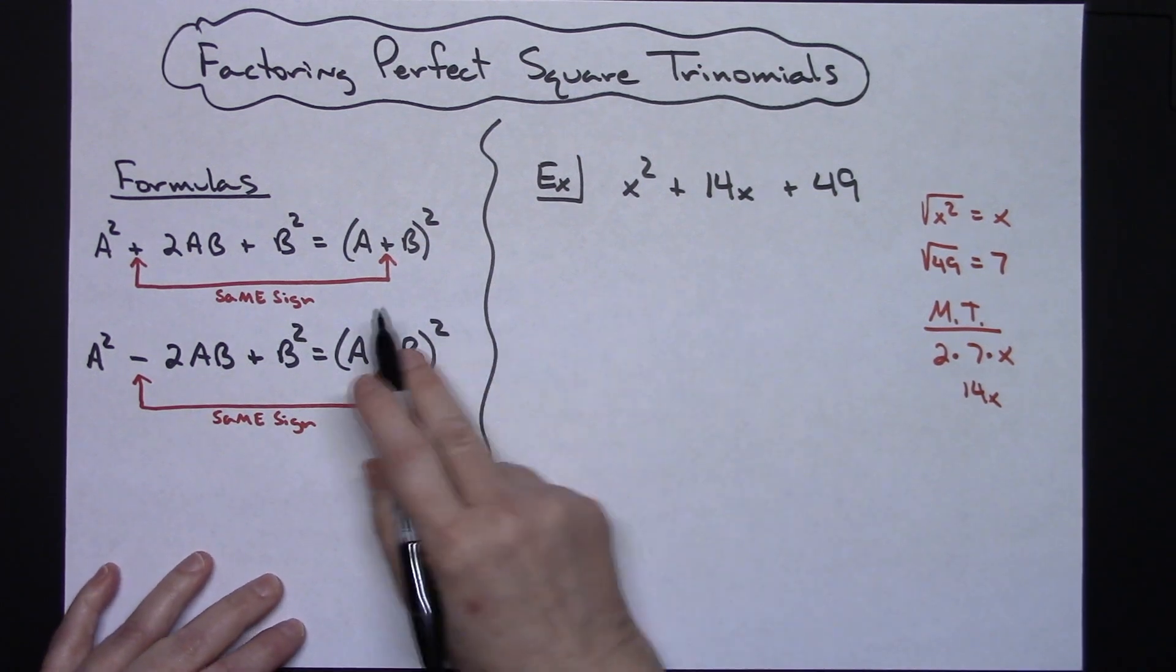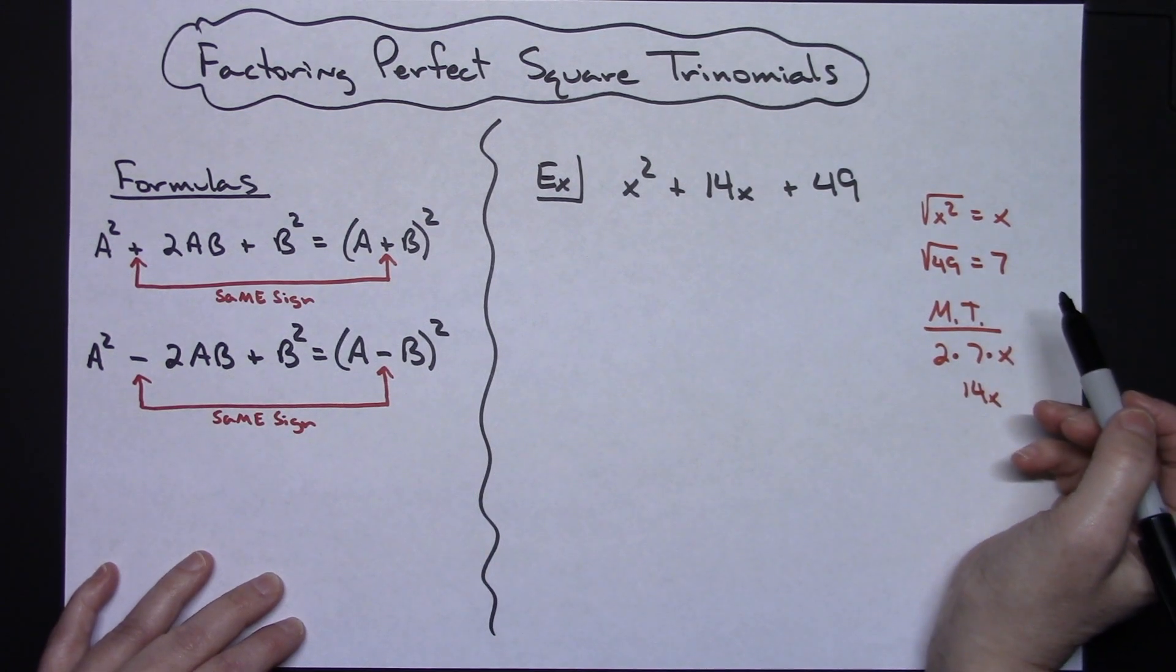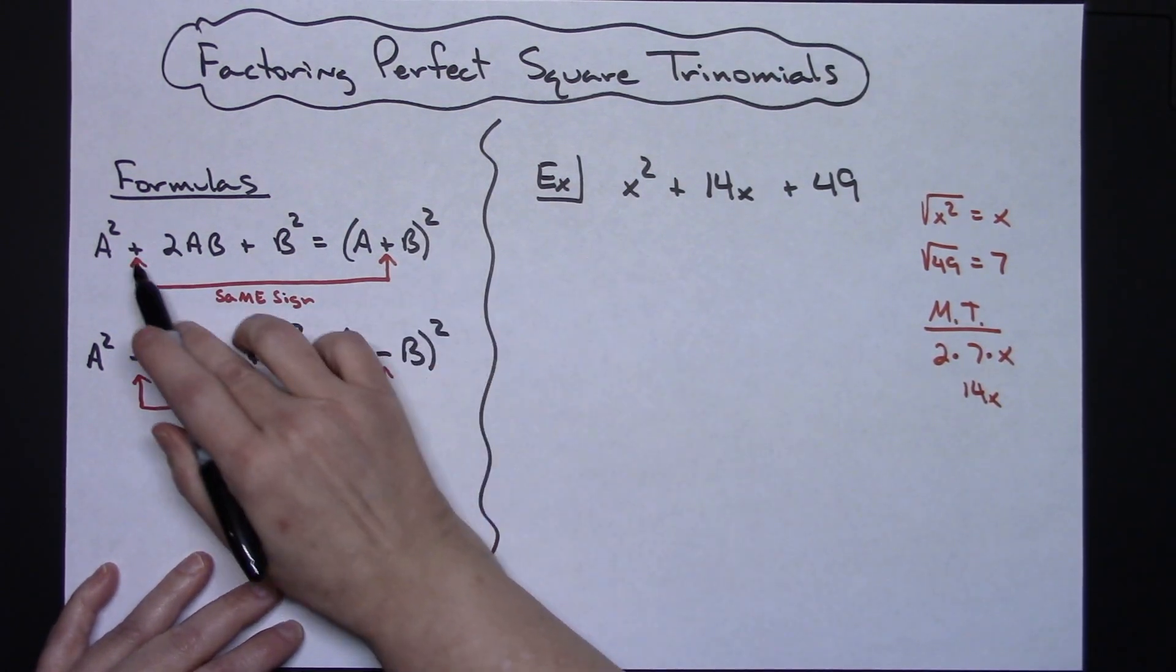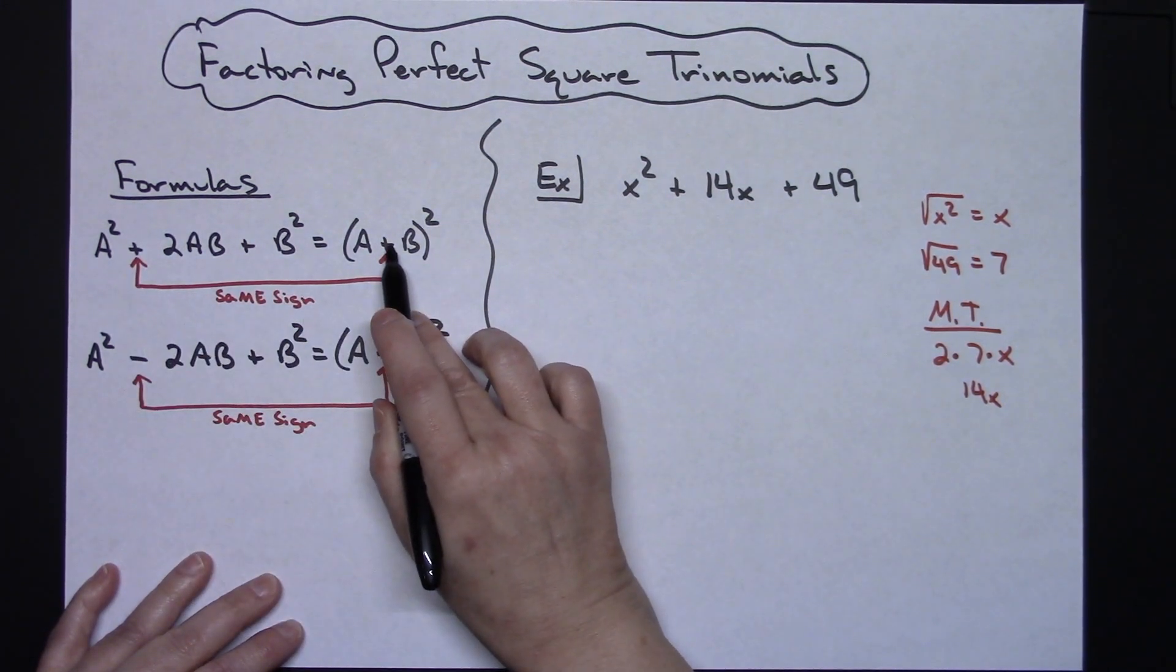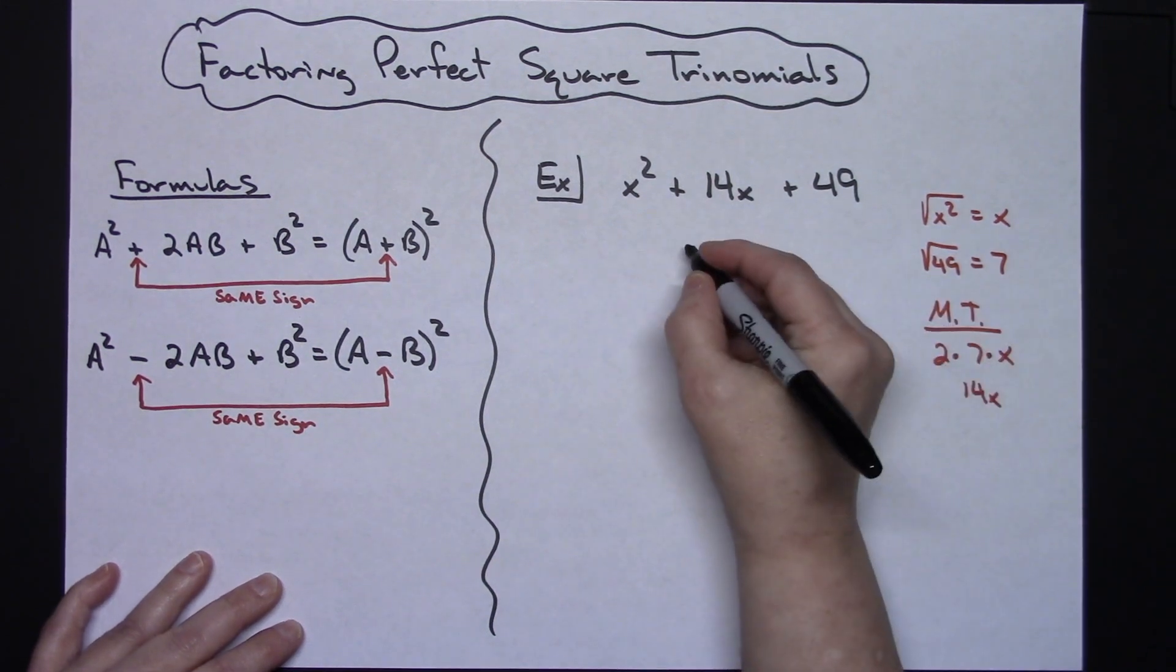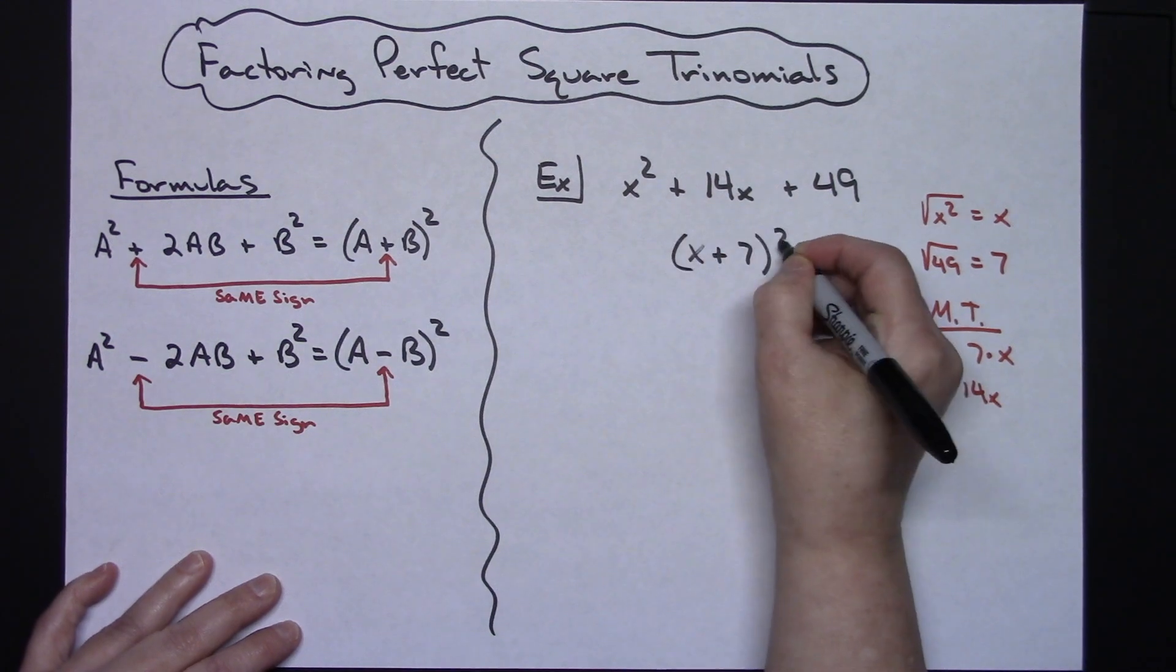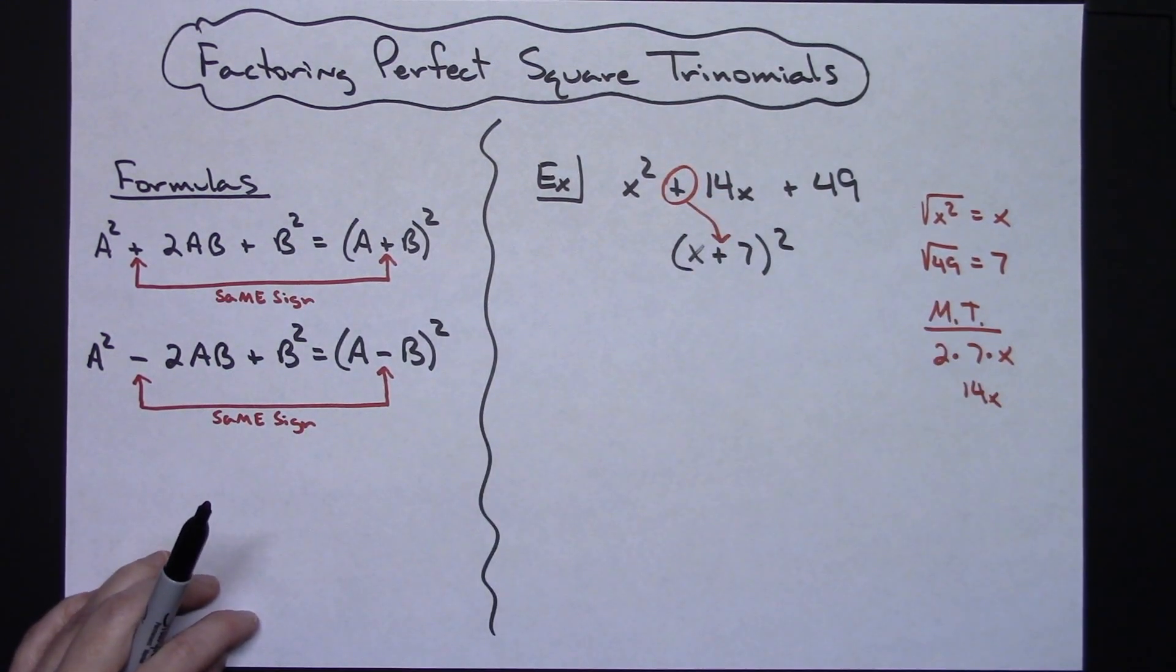If you realize that, then these two square roots, the x and the 7, is going to give you your answer for your a and your b here. And whatever sign is at the beginning here will be the sign in your answer. So since this is a plus, I will have a plus in here. So my answer is going to be (x + 7)². Recognizing that that is the sign where the plus comes from.